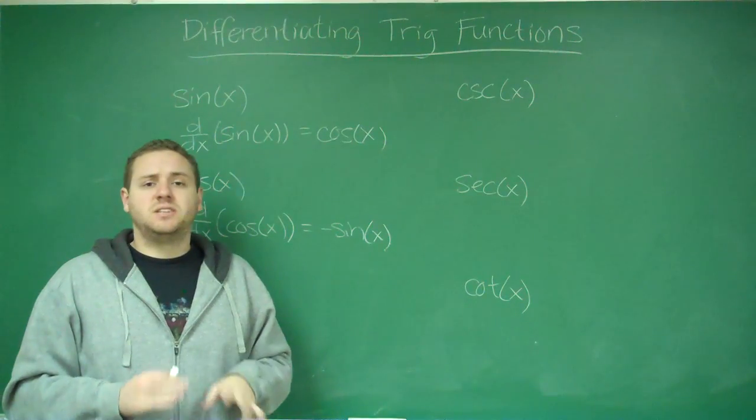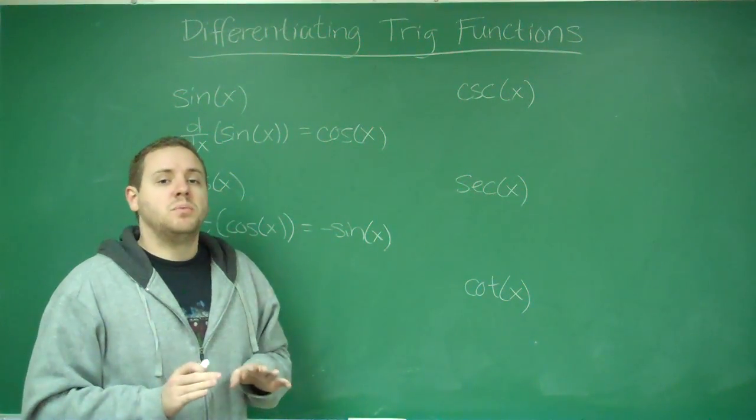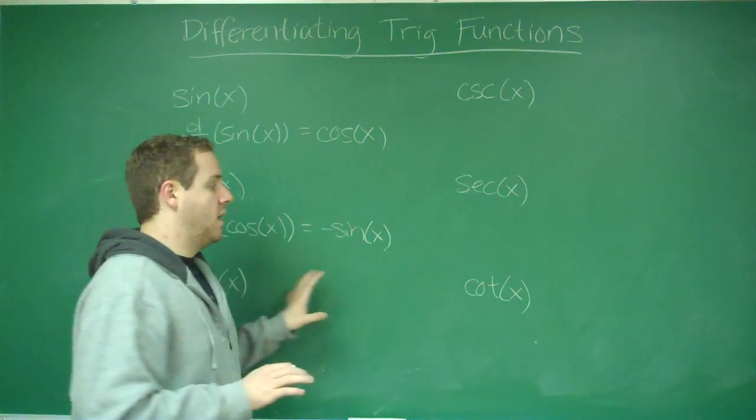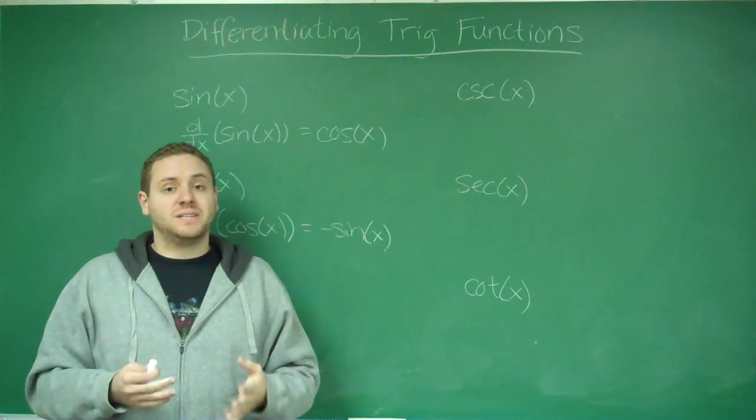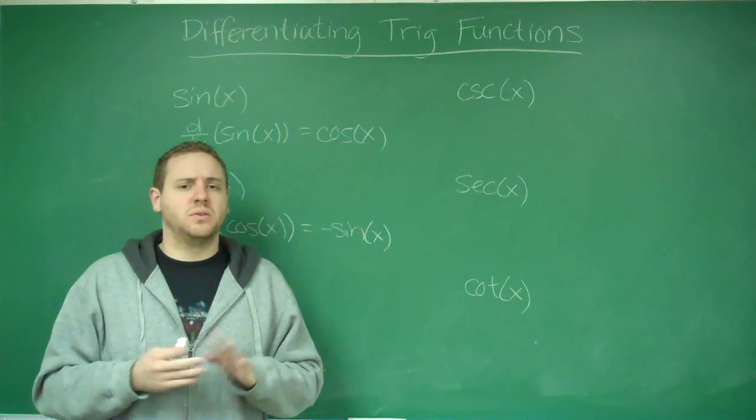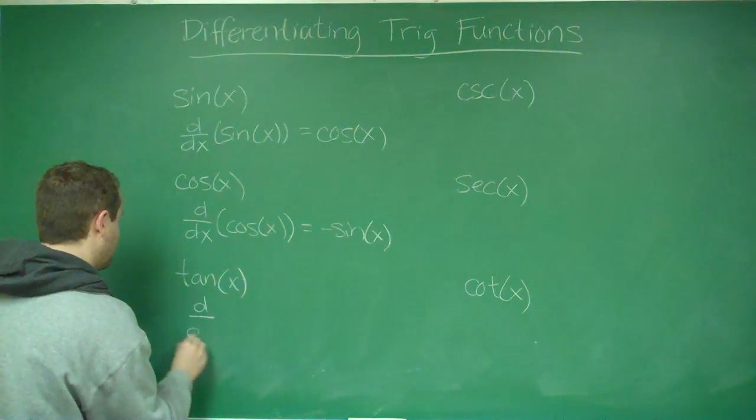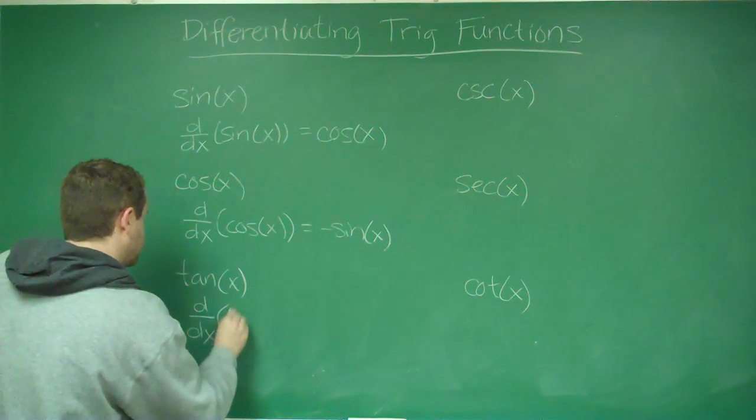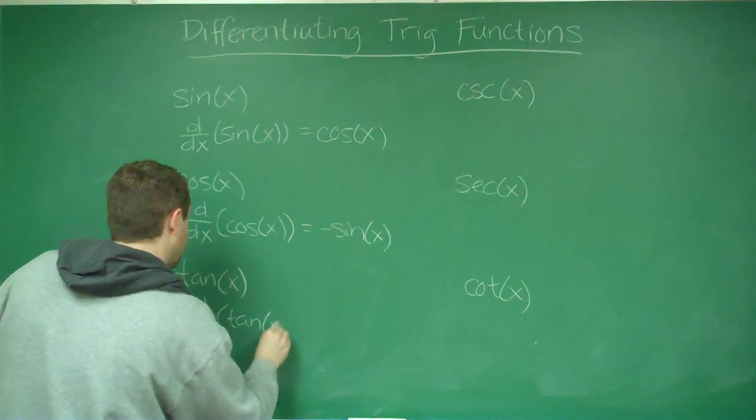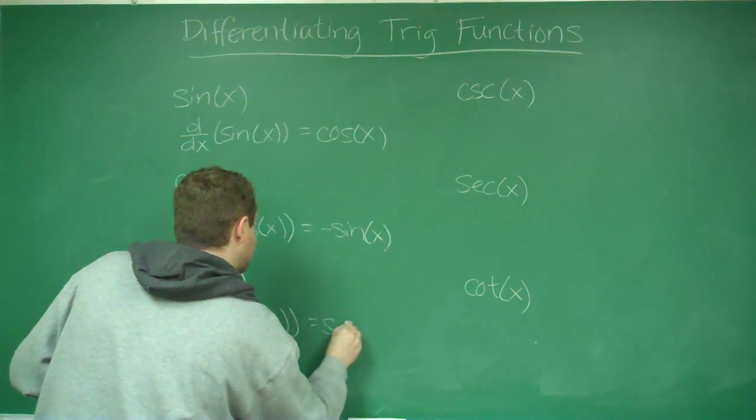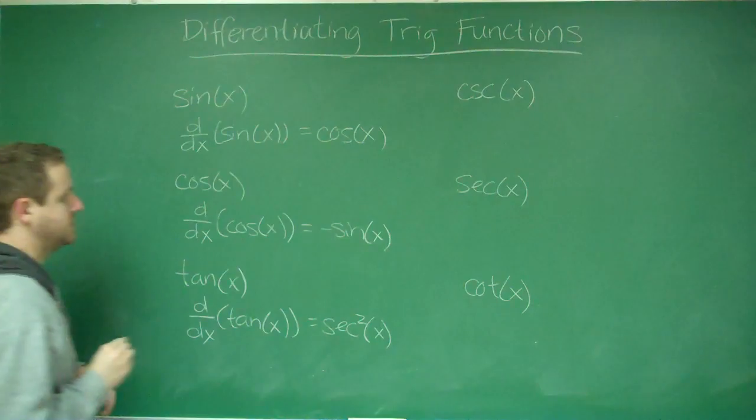But it's probably handy to just memorize them all. Keep in mind, you might have to show how you do it by quotient rule or something on a test, but just remembering them is going to be certainly handy. The derivative of tangent x is secant squared of x.